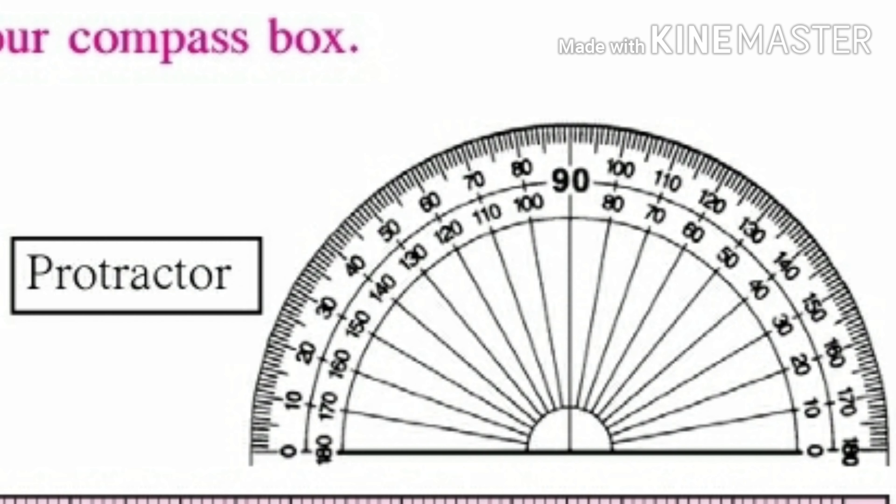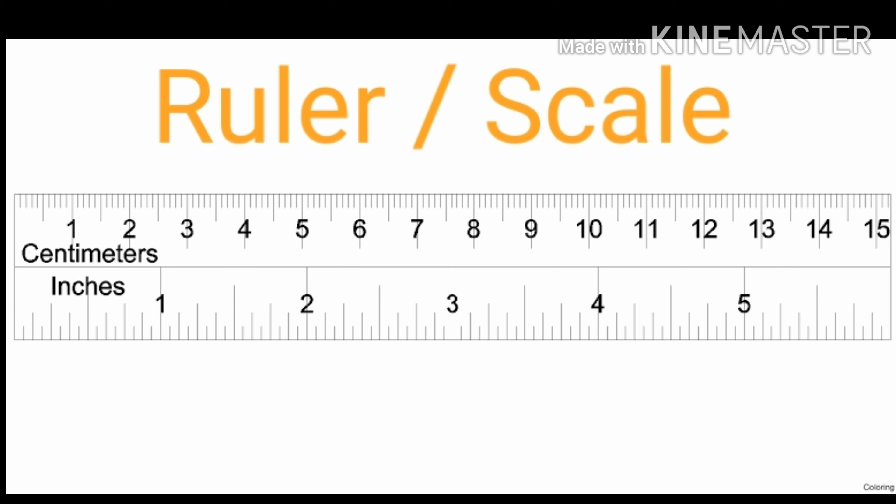The instrument shown is a protractor. The usage of a protractor is to draw and measure angles. This is a ruler or scale.